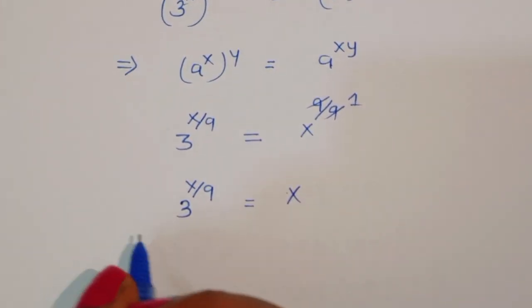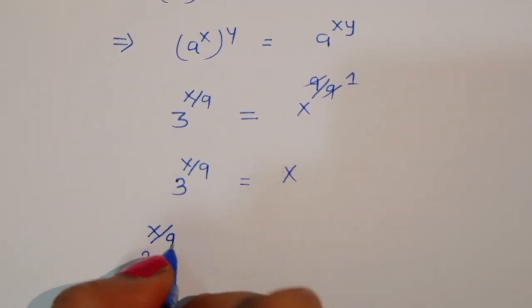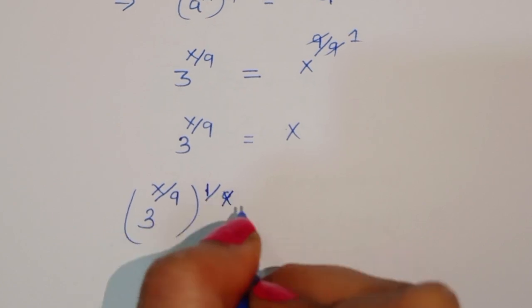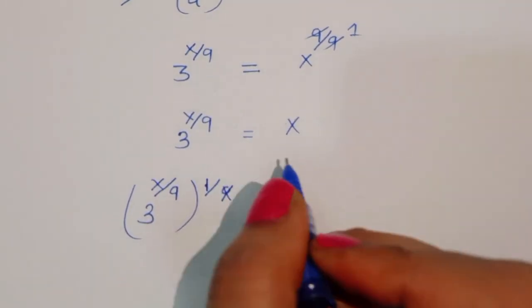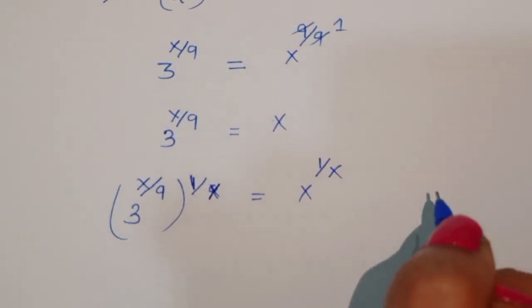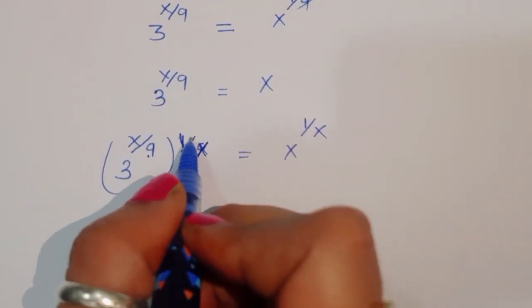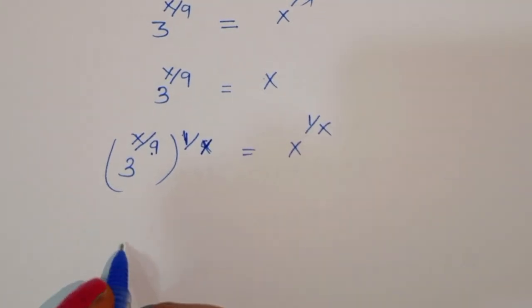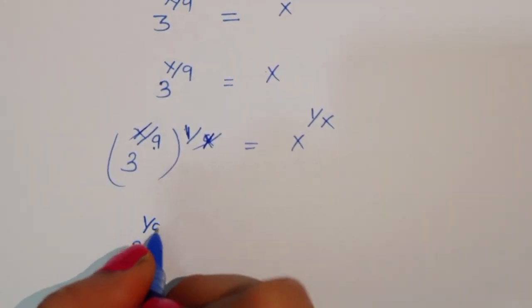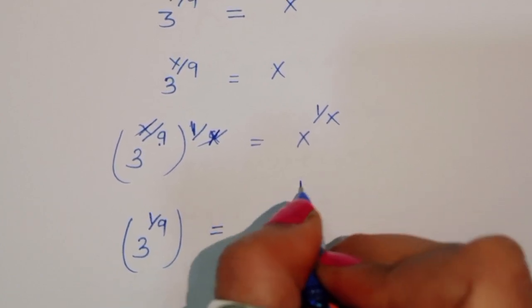Now we raise both sides to the power 1/x. So 3 power x by 9, raised to power 1/x, is equal to x raised to power 1/x. The x in the exponent cancels, giving us 3 power 1/9 is equal to x power 1/x.